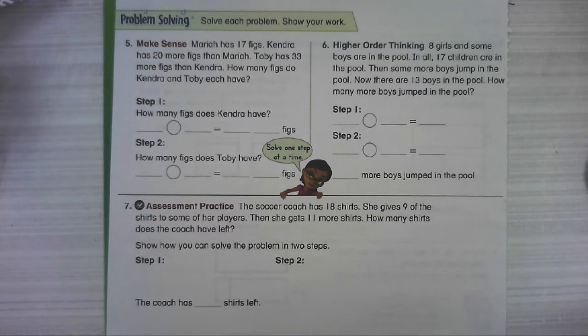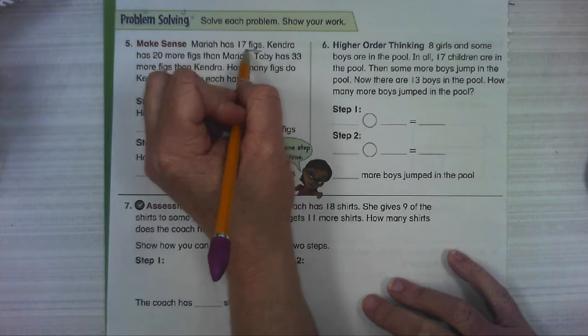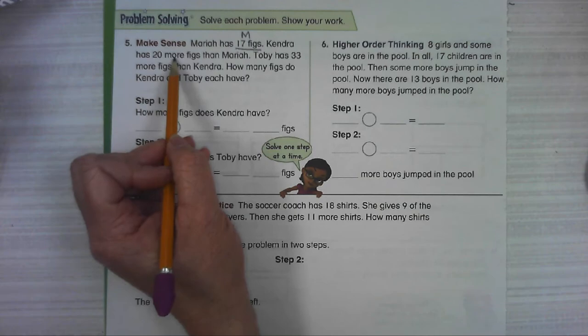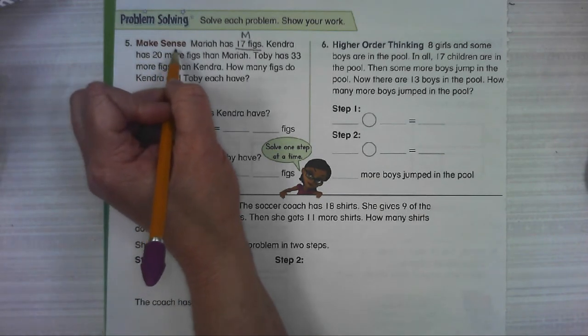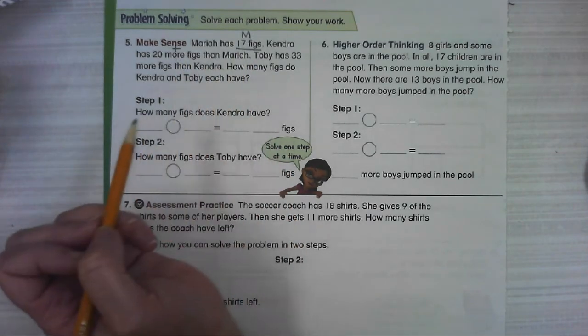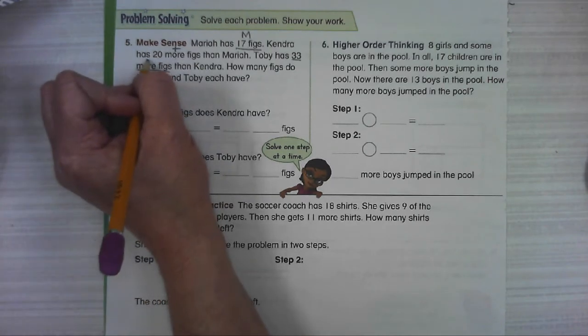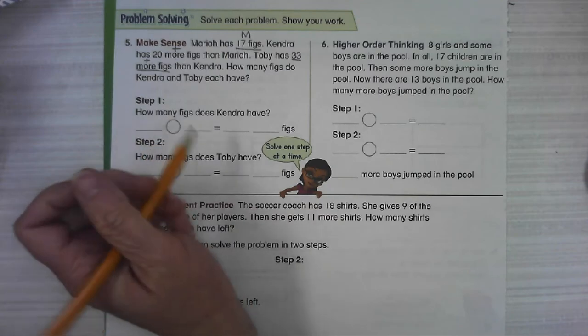Number five. Mariah has 17 figs. Kendra has 20 more figs than Mariah. Toby has 33 more figs than Kendra. How many figs did Kendra and Toby each have? Now, if you're like me, that did not make a lot of sense the first time. But I know we have different people and we're talking about how many figs they have. Mariah has 17 figs. Kendra has 20 more figs than Mariah. More means we're going to add them together. So Kendra has 20 more than Mariah. Mariah has 17. That should help you figure out how many Kendra has. Toby has 33 more than Kendra. So you've got to figure out Kendra before you can figure out Toby.